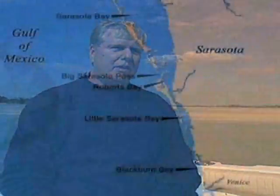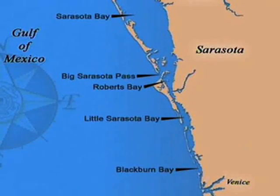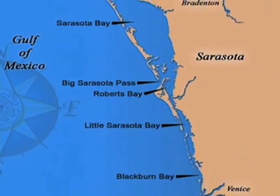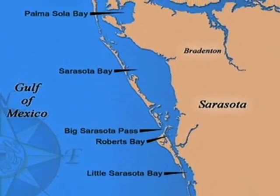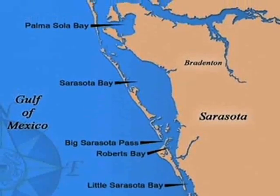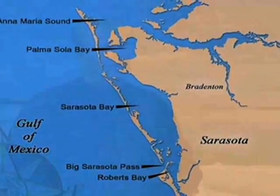As you're analyzing the system, you have to look at the different embayments within the water body itself. In the south we start with Blackburn Bay, Little Sarasota Bay, Roberts Bay, the Big Pass area, the main bay segment, and then up here in the Anna Maria Sound area. Each one of these areas is being analyzed independently.